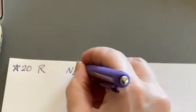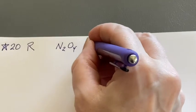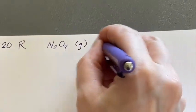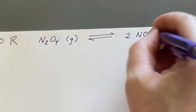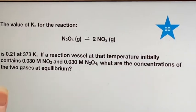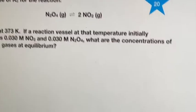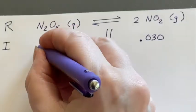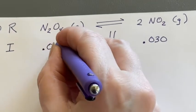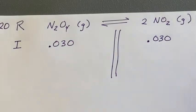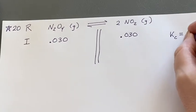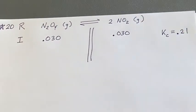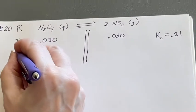So we're going to take the dinitrogen tetraoxide and we're going to have that in equilibrium with two nitrogen dioxides. Let's look at what they said about initial: the NO2 was 0.030 and so was the N2O4 0.030. I'm also going to write down that K sub c is 0.21 over here to the side just to remind myself.